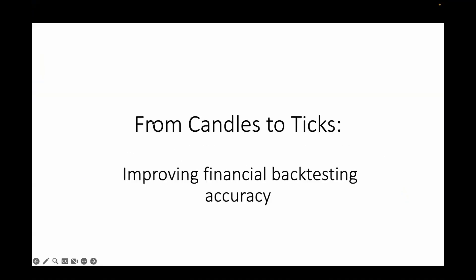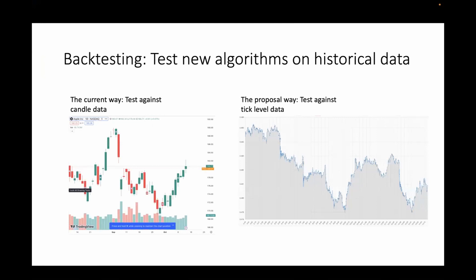My topic was improving the financial backtesting accuracy, and the specific idea I'm exploring is moving from candle data to tick data to facilitate this improvement. The candle data is the current standard format that almost all financial data is handled in. If you've been looking at any financial data, you've probably seen this before. Candle data is a compressed data format where you take some time period — for example, one minute, one hour, or one day.